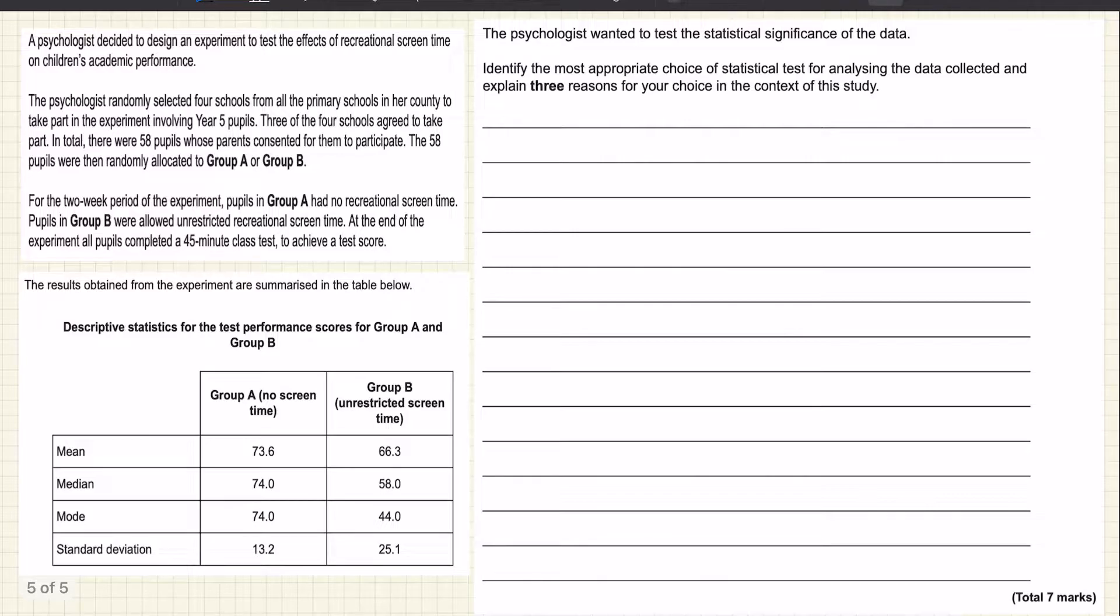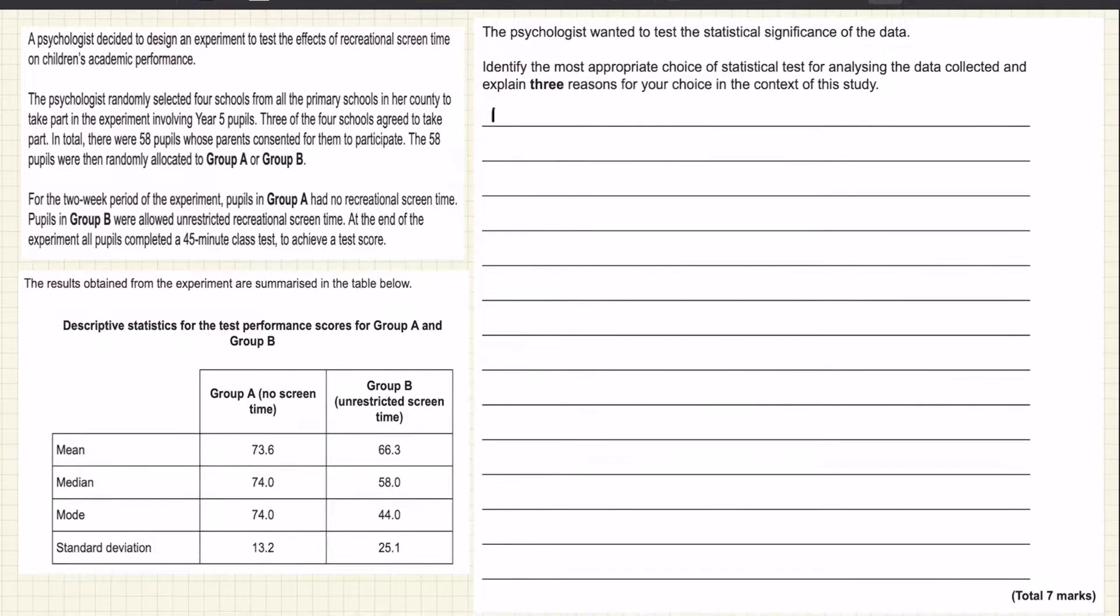So let's start with the test. Now an appropriate statistical test here is an unrelated t-test. There are other options that the mark scheme will let you have, for example a Mann-Whitney test, but obviously your justifications are going to be different if you choose a different test.